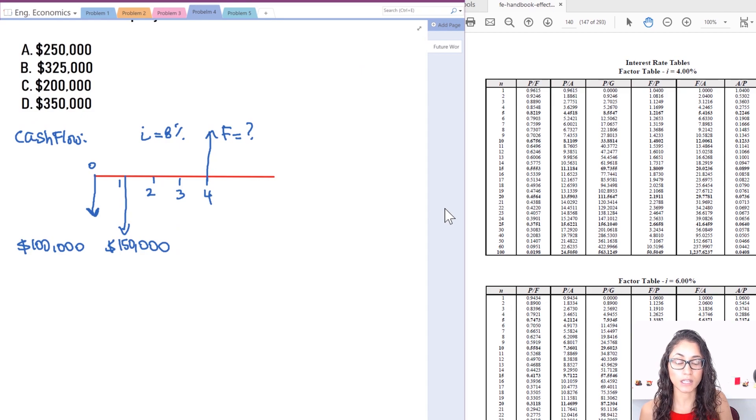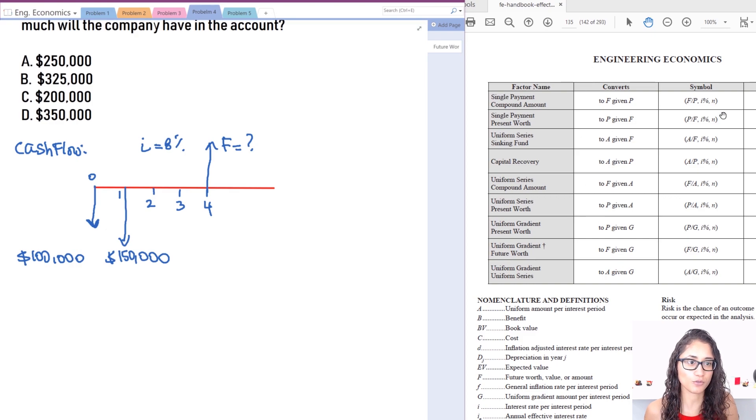First thing is, like usual, let's get the equations that we need to solve for this. So on page 135 we have equations here; we want to convert to F given P. So let's write it down. So I have F equals P times (F/P) for F to P. We have the interest rate, we have N years.